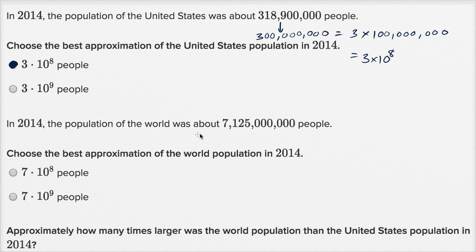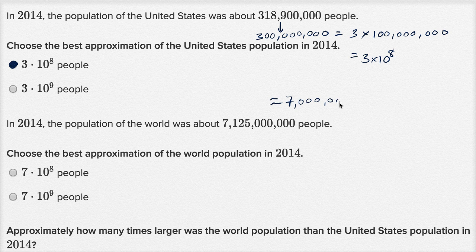In 2014, the population of the world was about 7,125,000,000 people. Choose the best approximation of the world population in 2014. We're dealing with billions here, so let me round to the nearest billion. We could say this is roughly seven billion. A billion is 10 to the ninth — we see nine zeros here — so this is going to be equal to seven times 10 to the ninth power.